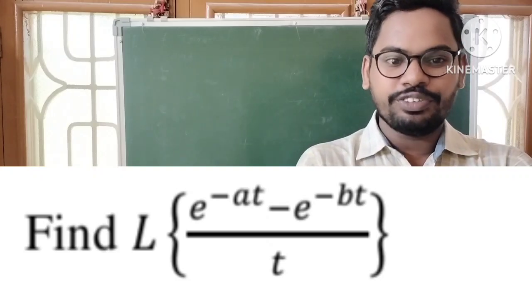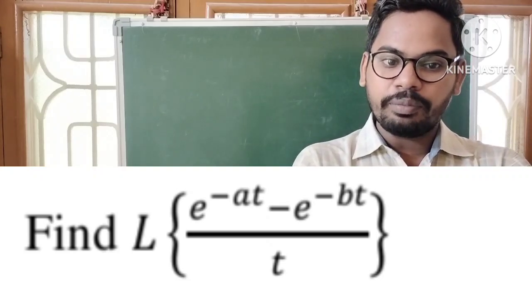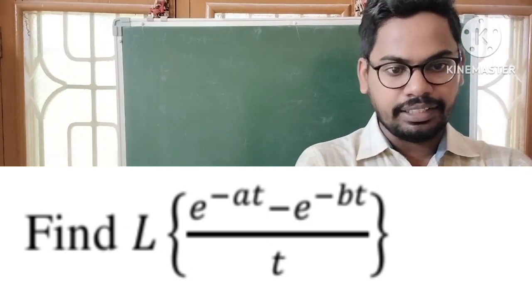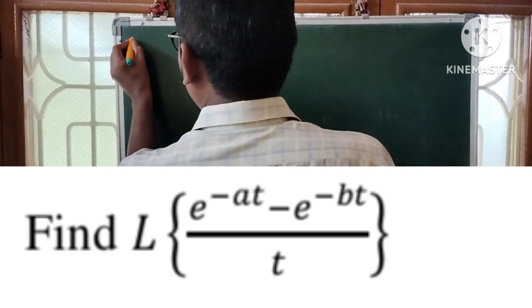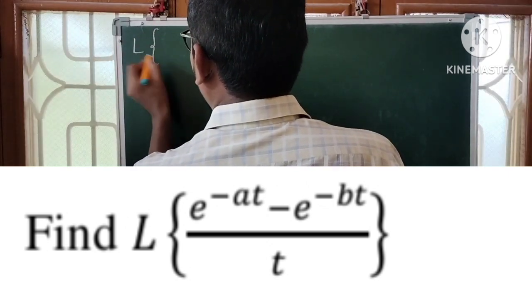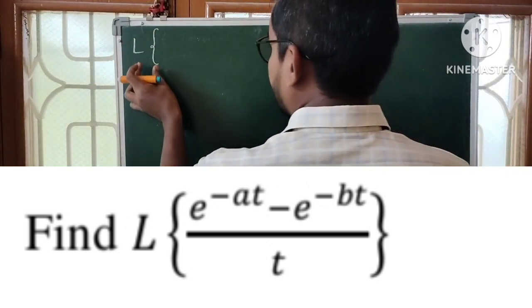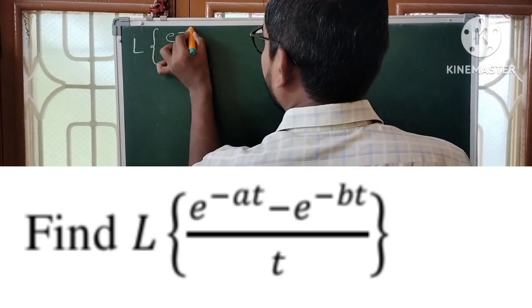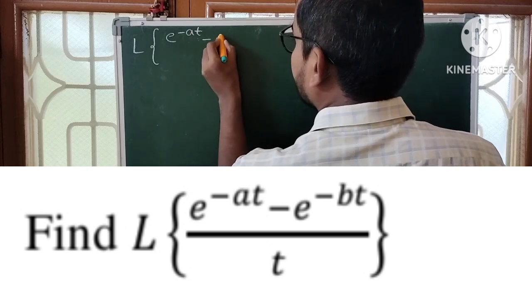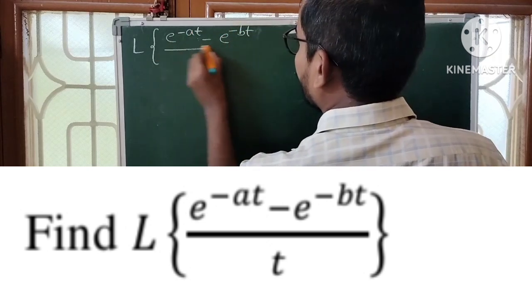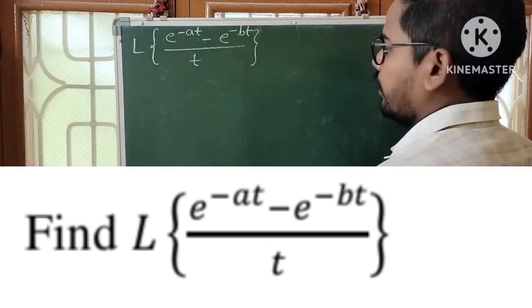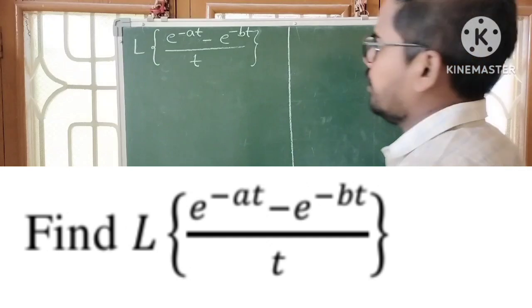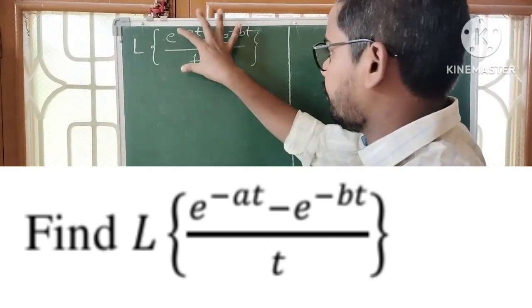Find the Laplace transform of (e^(-at) - e^(-bt)) / t. We have to find the Laplace transform of this function.